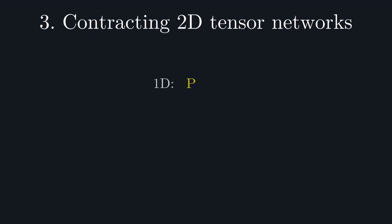In 1D, contraction is easy, as it's essentially the problem of matrix multiplication. In 2D and beyond, however, the problem of exact contraction is sharp P complete.